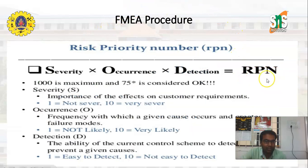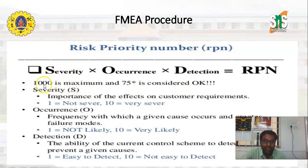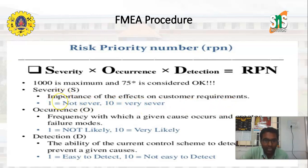To calculate the Risk Priority Number, we multiply the severity level by the occurrence level by the detection level. The severity level ranges from 1 to 10 and represents the importance of an effect on customer requirements. If the severity rating is 1, the effect is not severe. If the rating is 10, it is very severe.